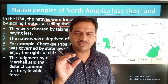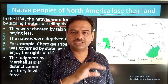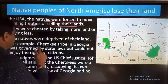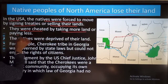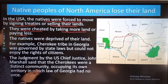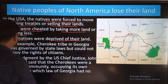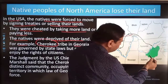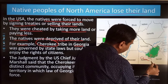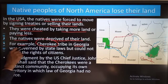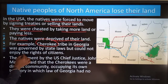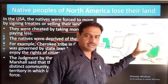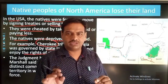Europeans started thinking that the areas occupied by these native people were quite fertile for the production of corn and other crops. So they were cheated — land was taken in large size while paying very low prices. An example is the Cherokee tribe in Georgia. The tribe was governed by state laws but could not enjoy the rights of citizens, even though citizens have certain fundamental rights.